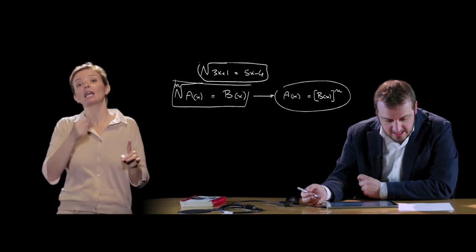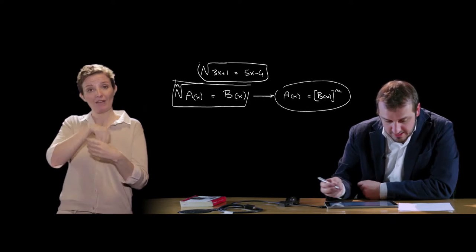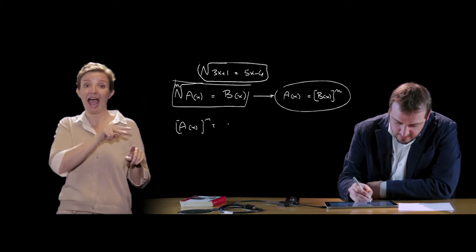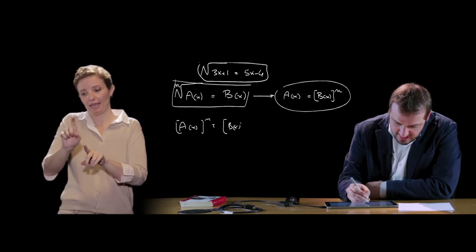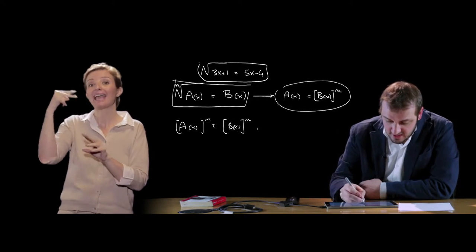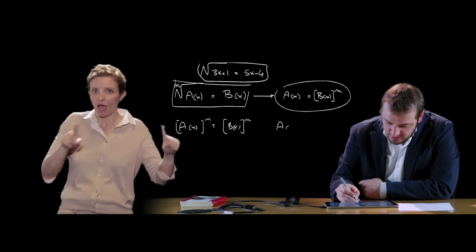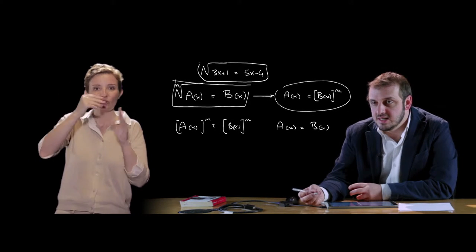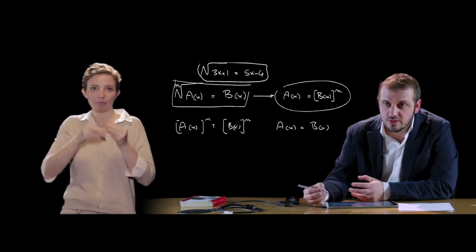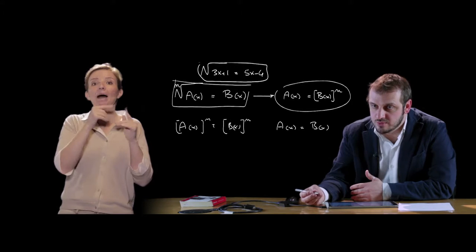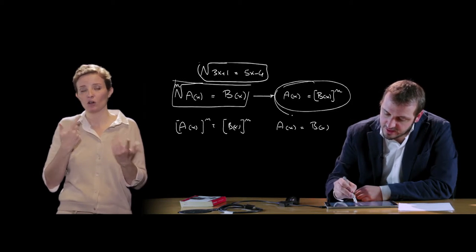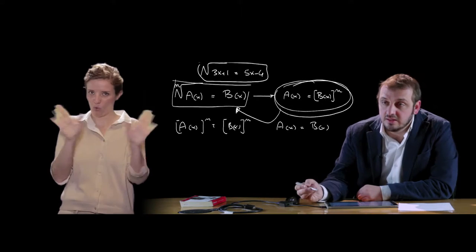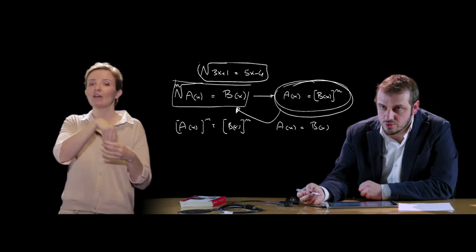È opportuno verificare che le soluzioni facciano parte di questo dominio perché a(x) alla n uguale b(x) alla n, nel caso in cui n sia un numero pari, non è assolutamente equivalente ad a(x) uguale b(x). Evidentemente quando si eleva a un indice pari sappiamo che il segno viene perso, quindi è necessario verificare se le soluzioni trovate facciano parte effettivamente dell'insieme delle soluzioni dell'equazione di partenza.